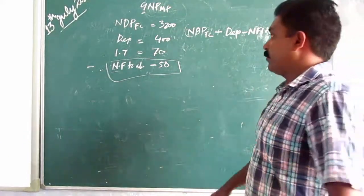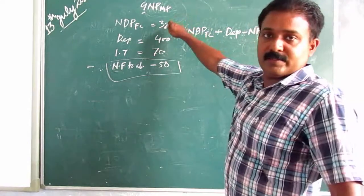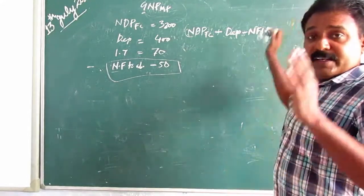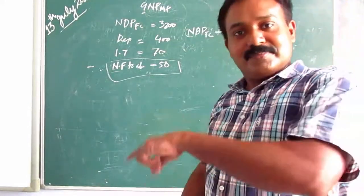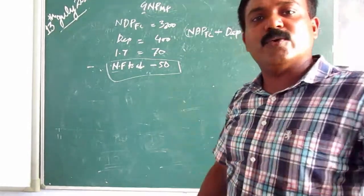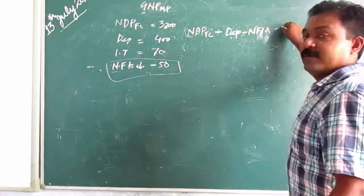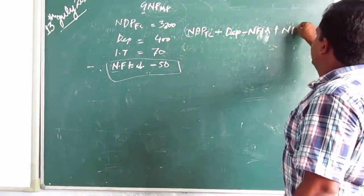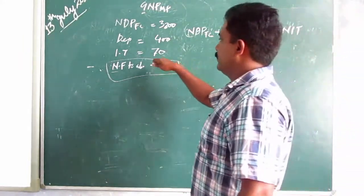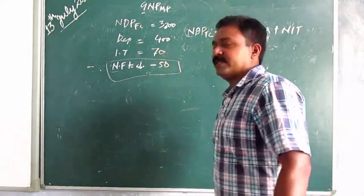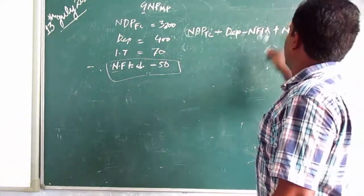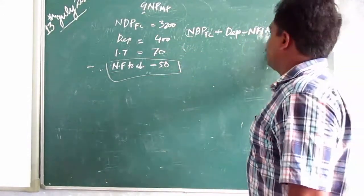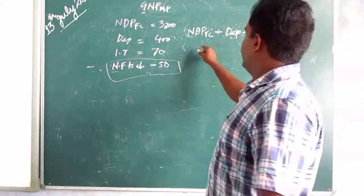That is India's situation. So NFIA here is negative, minus NFIA. Then from factor cost to market price: market price means NIT is added — indirect taxes like GST are added. If there are subsidies, those are also added. So plus NIT. Here indirect tax only, no subsidies, so it will be added.